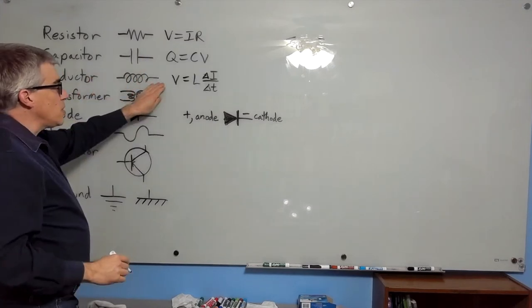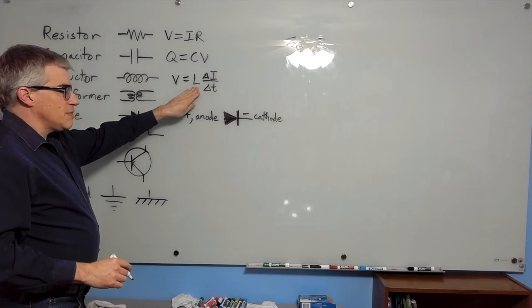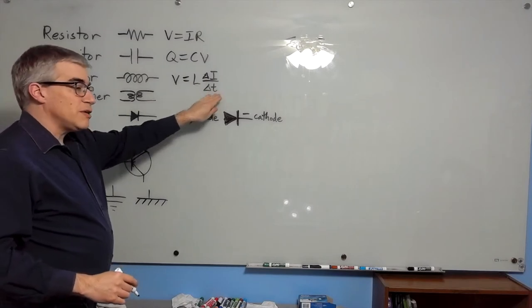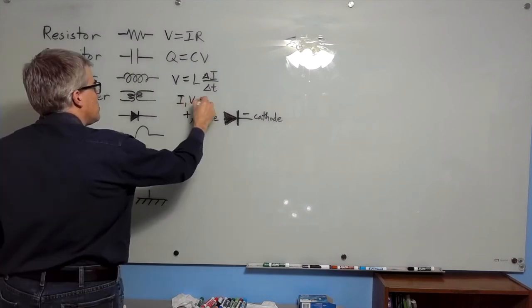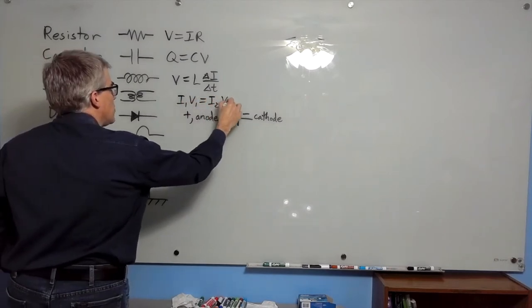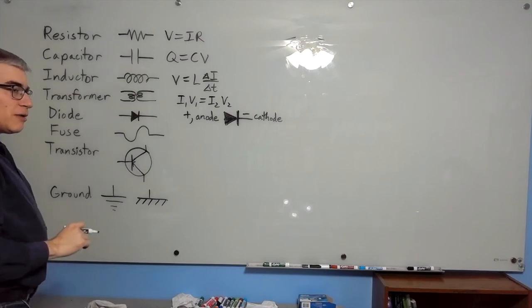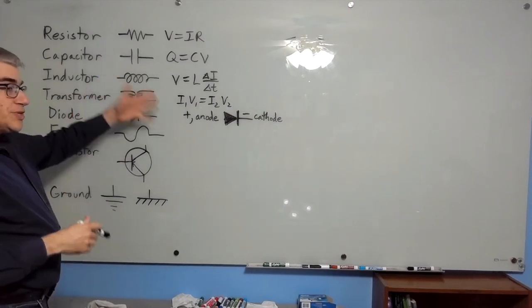An inductor is a single coil. The voltage across it is the inductance times the rate of change of current. A transformer is two inductors combined together. I1V1 equals I2V2. Power in equals power out, and it lets you turn volts into amps or vice versa.